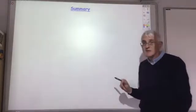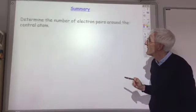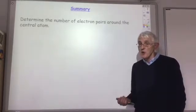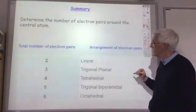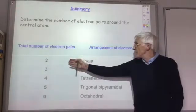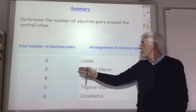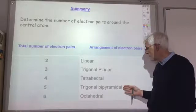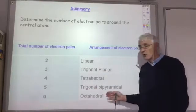Okay, so to summarize that, you determine the number of electron pairs around the central atom. And once you know how many electron pairs you've got, then if there's two electron pairs, it's linear. Three, trigonal planar. Four, tetrahedral. Five, trigonal bipyramidal. And six, octahedral.